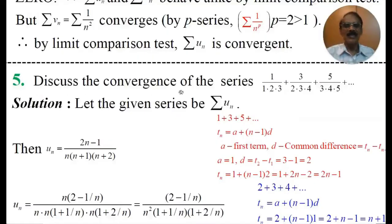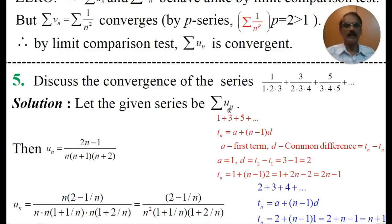Discuss the convergence of the series: 1/(1·2·3) + 3/(2·3·4) + 5/(3·4·5) + so on. In this problem, the nth term of the series is not given. So we have to find the nth term of the series. Let the given series be series un, where un is the nth term.